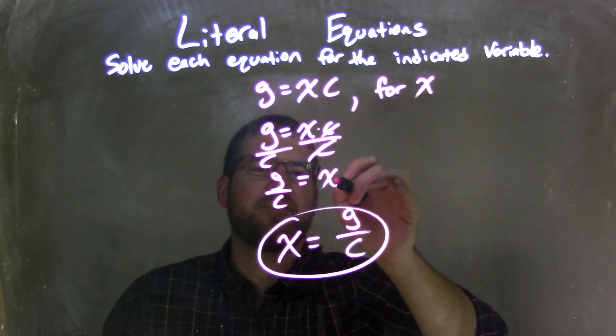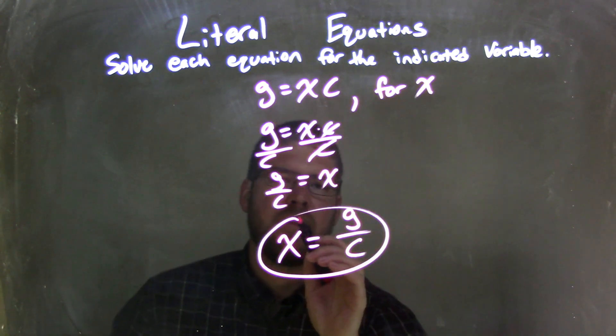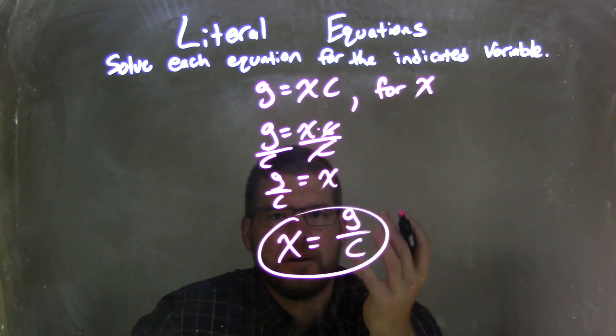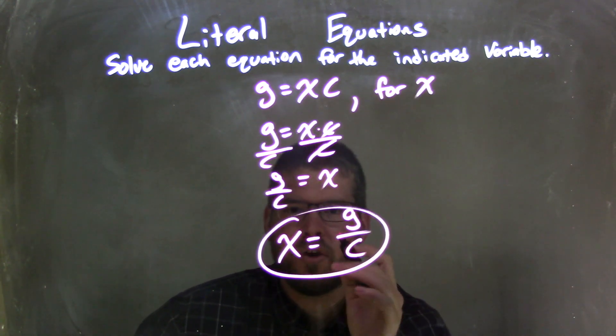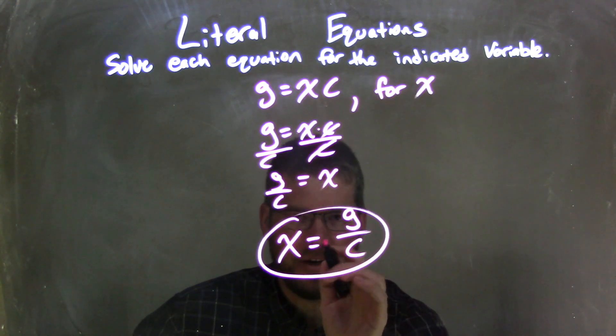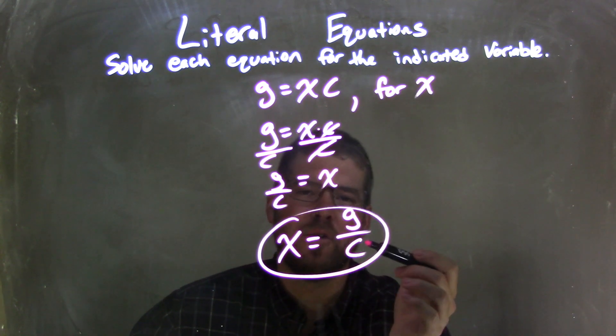And so when I did that, I got x by itself on the right, and I had g over c on the left. From there, I rewrote it to have x come first, because that looks nicer. So I'm left with a final answer: x equals g over c.